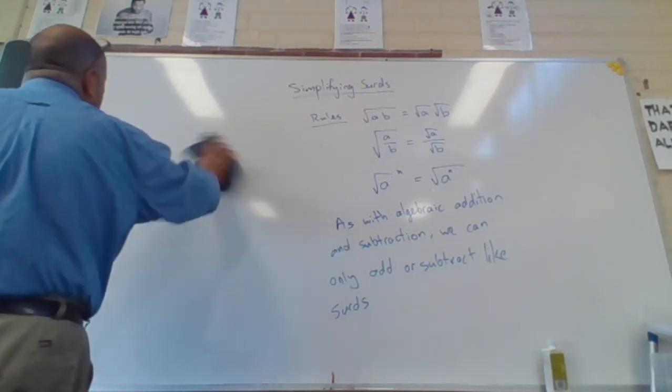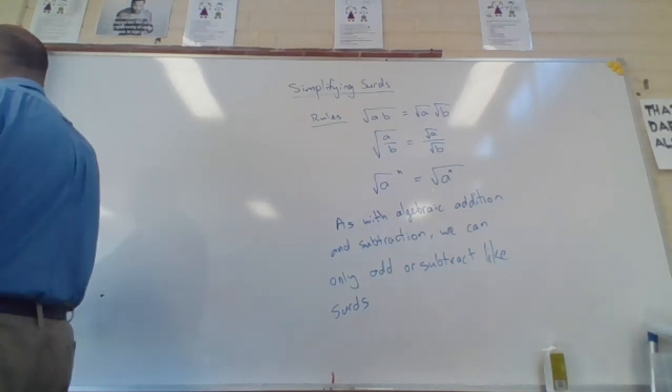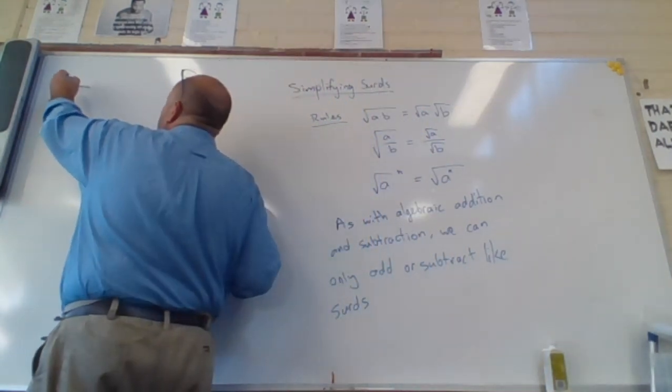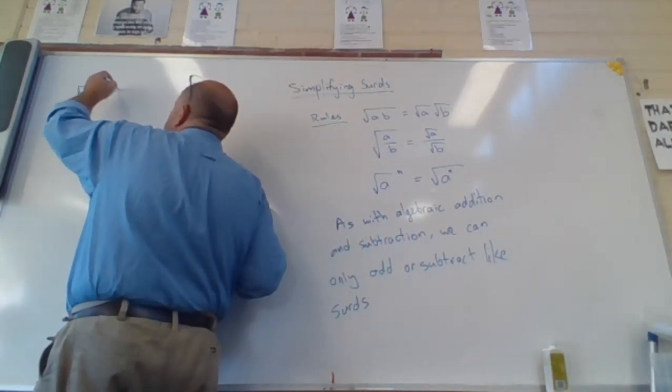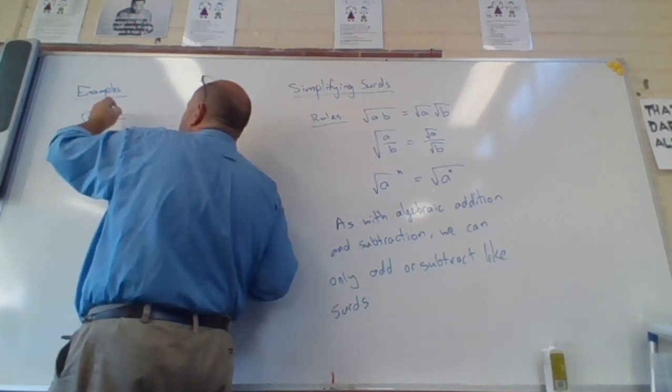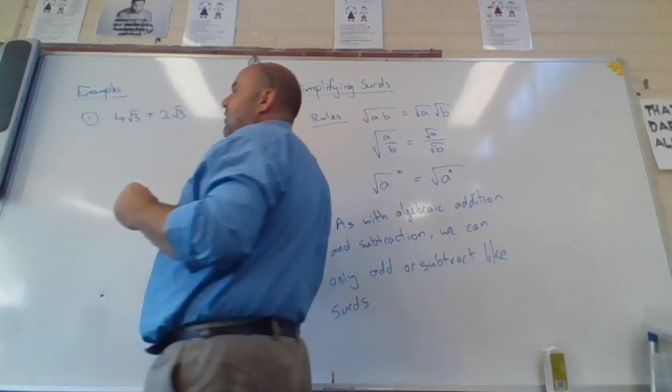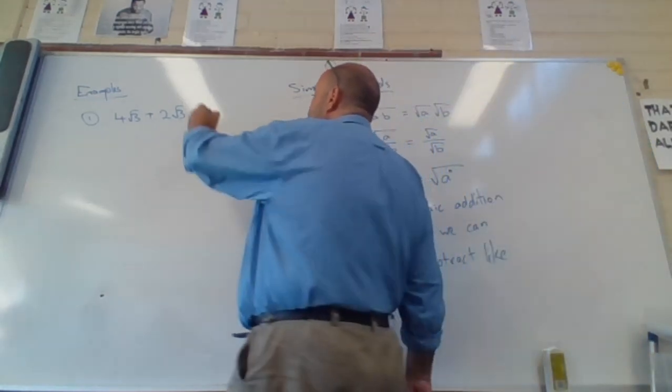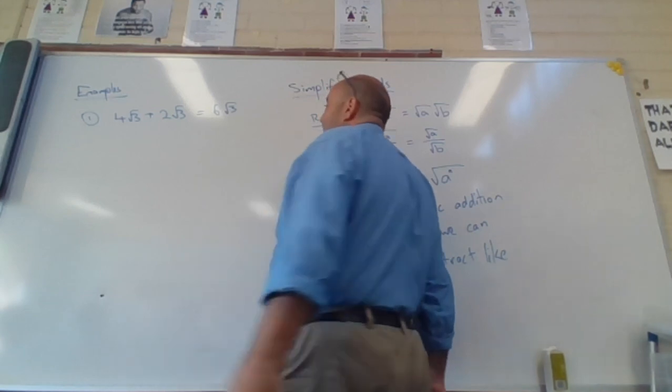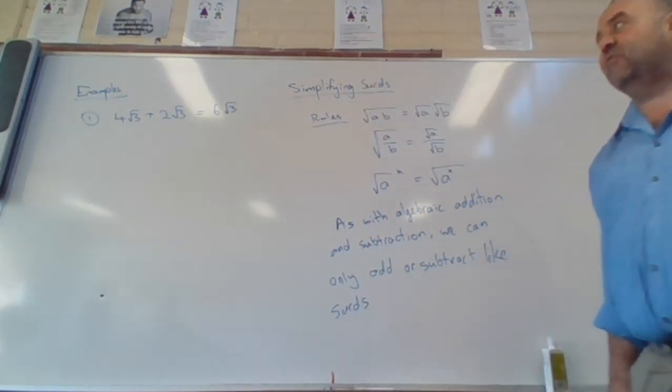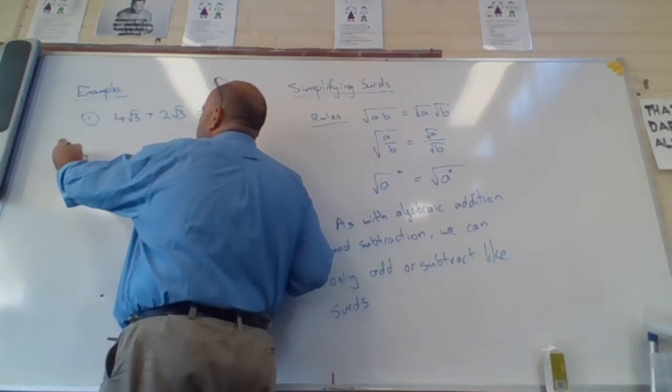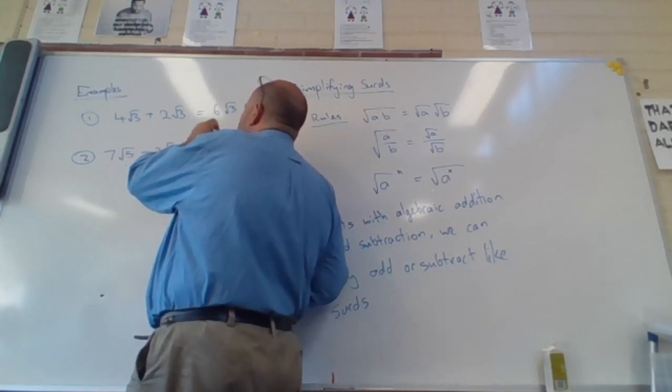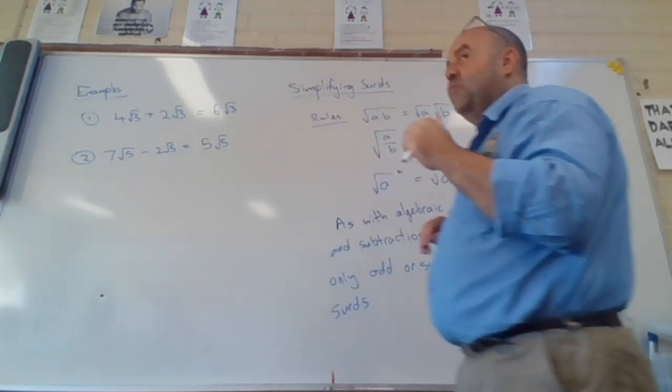Don't panic too much if you don't keep up with the notes because it will be available on the Google Classroom, on YouTube in the Google Classroom. So let's look at some examples. If I have 4 root 3 plus 2 root 3, just like with algebraic addition and subtraction, because they are like surds because they're both root 3, I can add them. And I only add the coefficients, I only add the numbers out the front. Similarly with subtraction, 7 root 5 take away 2 root 5 is 5 root 5. So the thing inside the square root does not change.